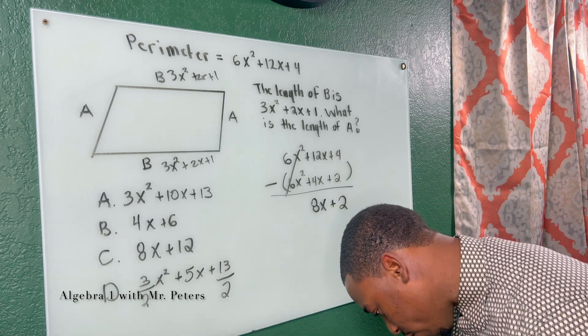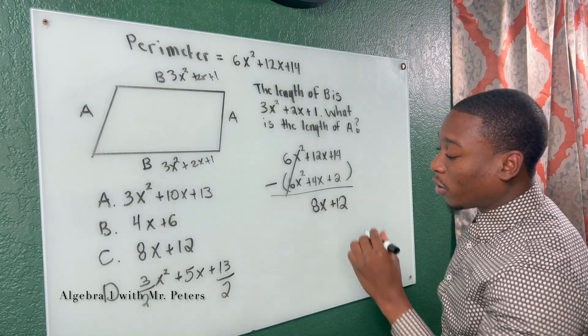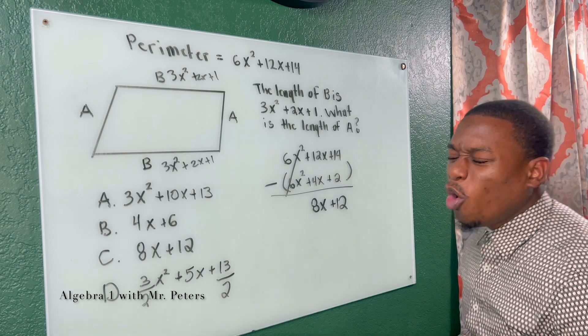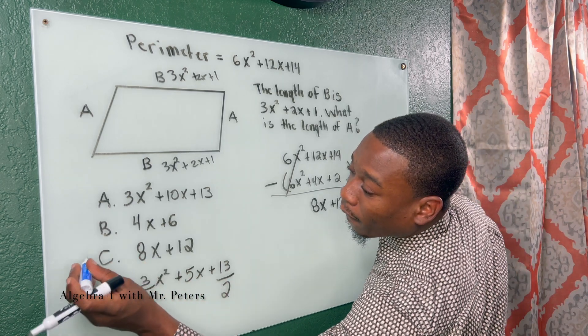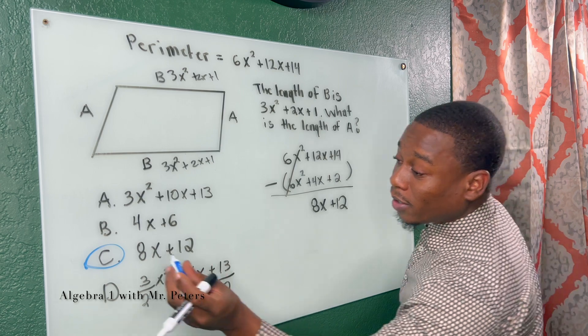Hold on real quick, real quick. Oops, I knew I made a mistake. This is 14. I'm so sorry. So this should be plus 12. So now, a lot of us are going to say, yo, Mr. Peters, I got the answer. It's C. And guys, that is wrong. This is the trick. Why is it wrong? You guys already know, but I'm going to tell you so you know.